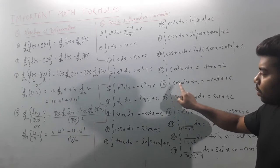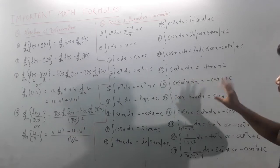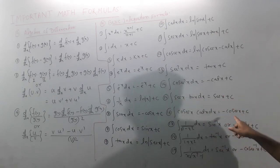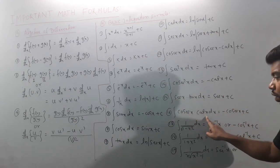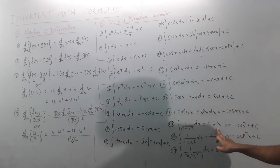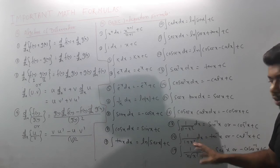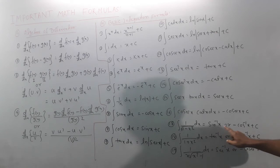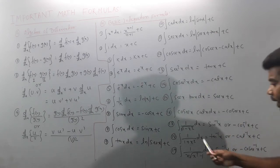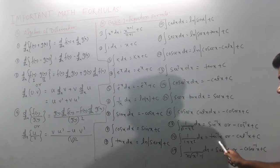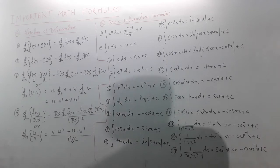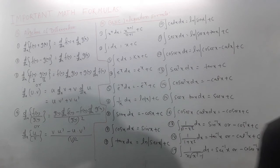Derivative of sec(x) is sec(x)·tan(x), so integration of sec(x)·tan(x) is sec(x). Derivative of cosec(x) is -cosec(x)·cot(x). For inverse trig: derivative of sin⁻¹(x) is 1/√(1-x²). Derivative of cos⁻¹(x) is -1/√(1-x²). Derivative of tan⁻¹(x) is 1/(1+x²), and of cot⁻¹(x) is -1/(1+x²). Derivative of sec⁻¹(x) or cosec⁻¹(x) is 1/(x·√(x²-1)). Pause the video and note down.